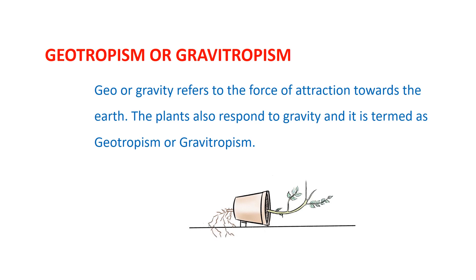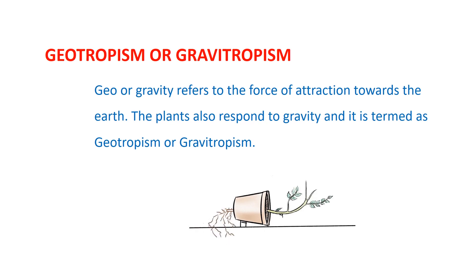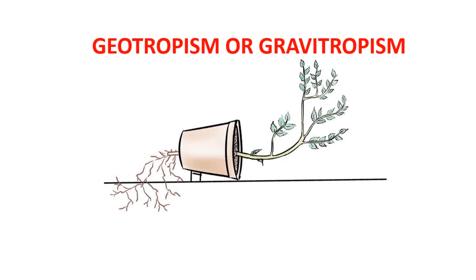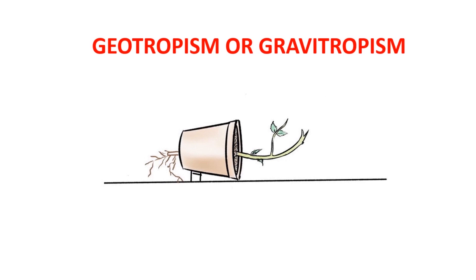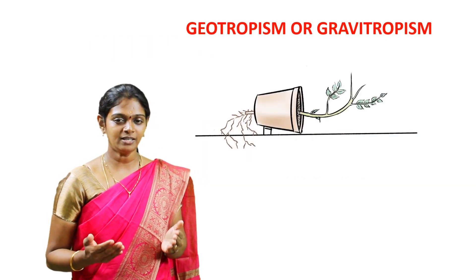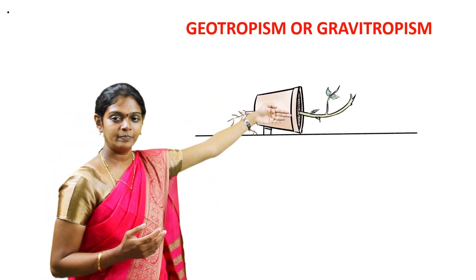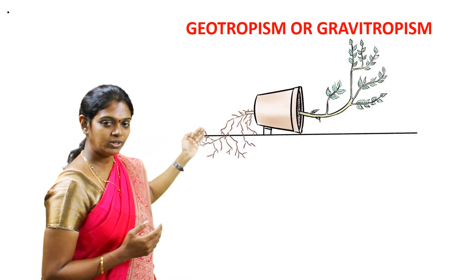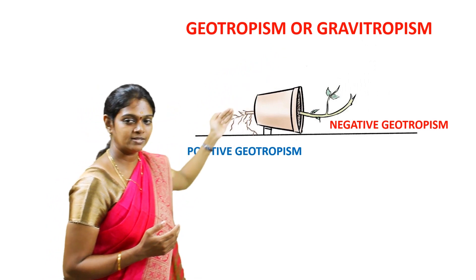Geotropism, or gravitropism: 'geo' or 'gravity' refers to the force of attraction towards the earth. Plants also respond to gravity, and this is termed geotropism or gravitropism. The growth of plant parts in response to the force of gravity is called geotropism. For example, when a plant is grown in a pot placed horizontally, you can see the shoot of a plant grows upwards — so the shoot is negatively geotropic.